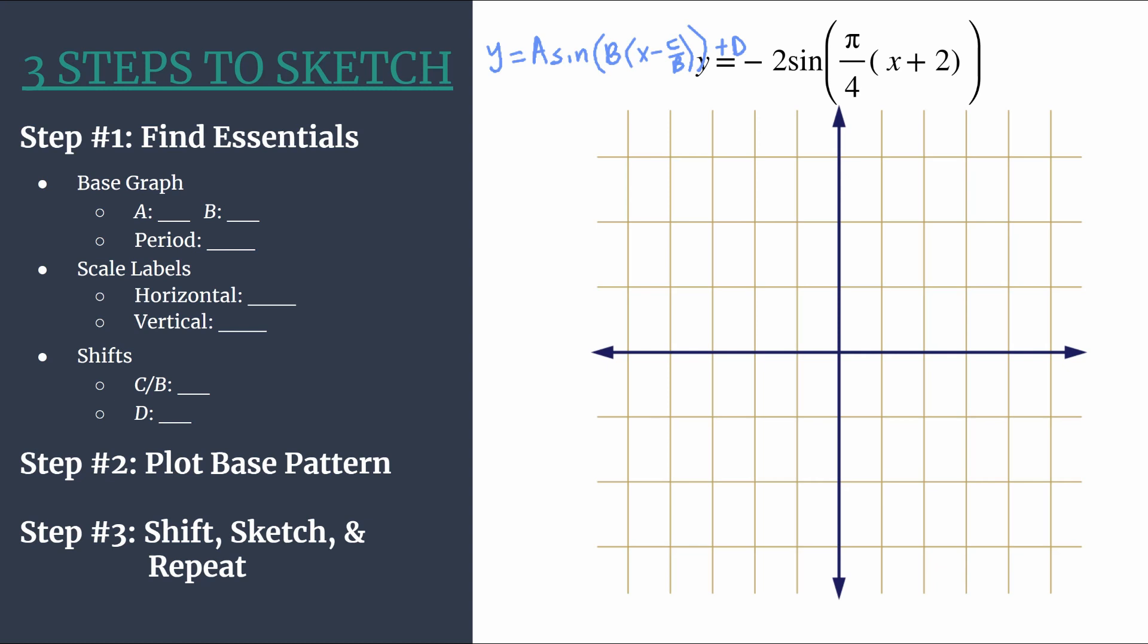Let's start with step one. Find the essential information. Let's get everything organized so that the actual graphing is very easy. We're first going to start with the base graph which we'll use for the base pattern in step two. We see that a is negative two and so the absolute value of a gives us the amplitude, which is just the distance from midline to maximum or midline to minimum. So our amplitude is two.